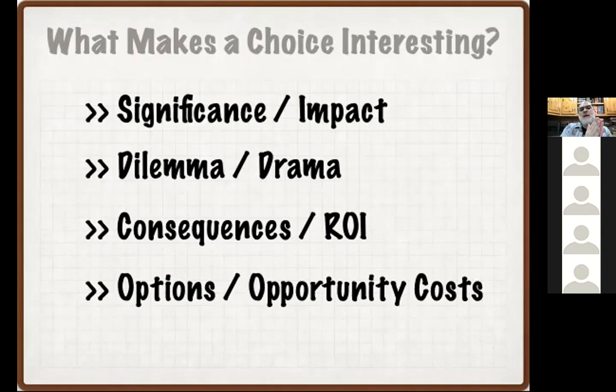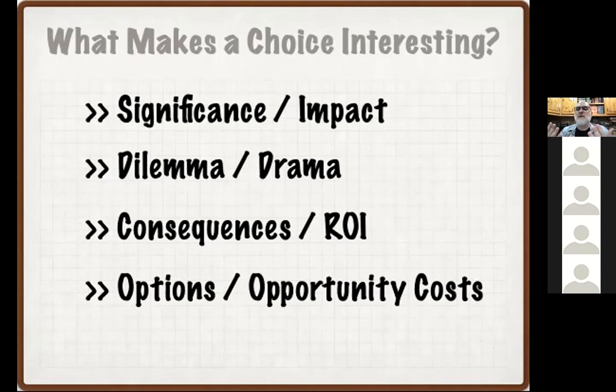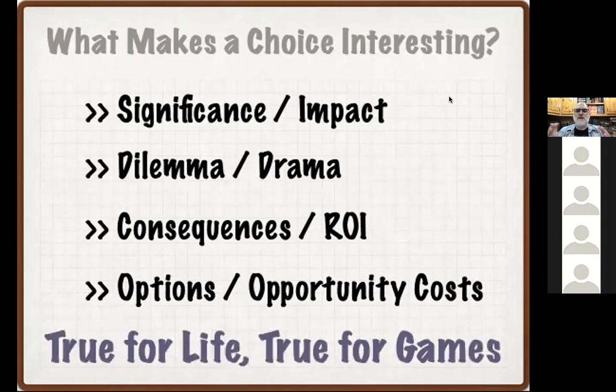Another thing that makes a choice interesting is when we have to make it and forsake other choices — that's called an opportunity cost. If I want to go see a movie at noon on Sunday, but I have a friend who wants to play Dungeons and Dragons at noon on Sunday, and my kids who want to go to the park at noon on Sunday, I can pick one of those things but I can't pick all of them. That's going to make that choice meaningful and impactful.